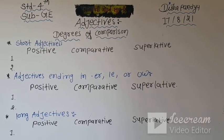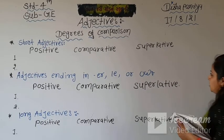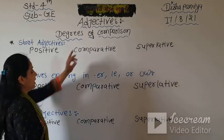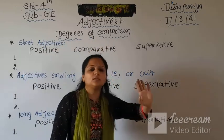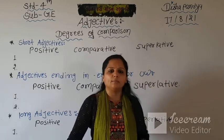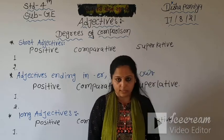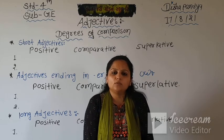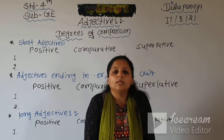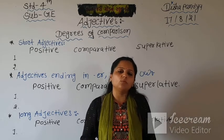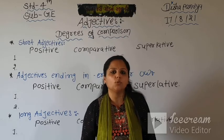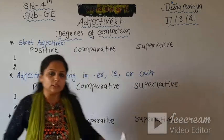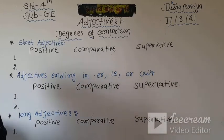Now we will learn more examples of these degrees - positive, comparative, and superlative. We will see the adjectives used in them, because our unit is 'adjectives of degrees of comparison' - we are going to study the adjectives used in these degrees. Adjectives of degrees of comparison means when we use adjectives in these three degrees, how their formation changes. First, we will learn about short adjectives.